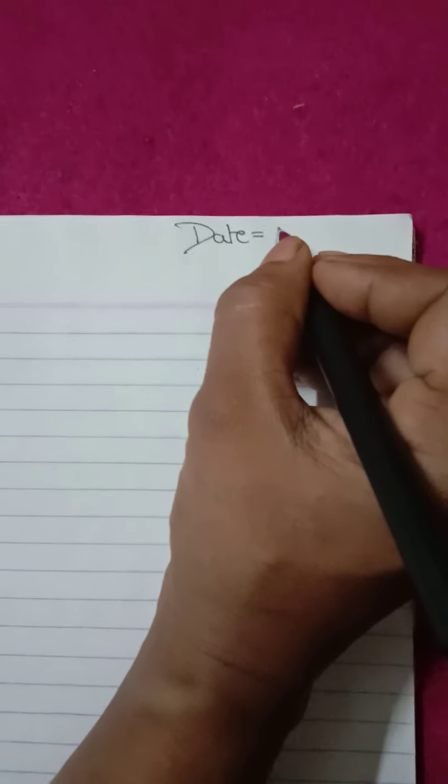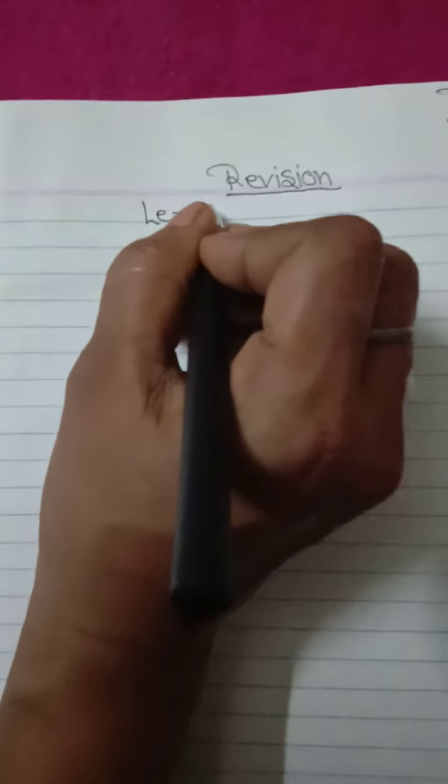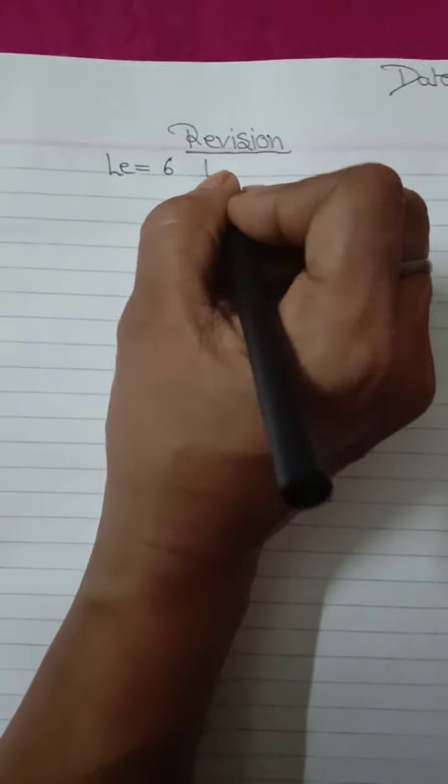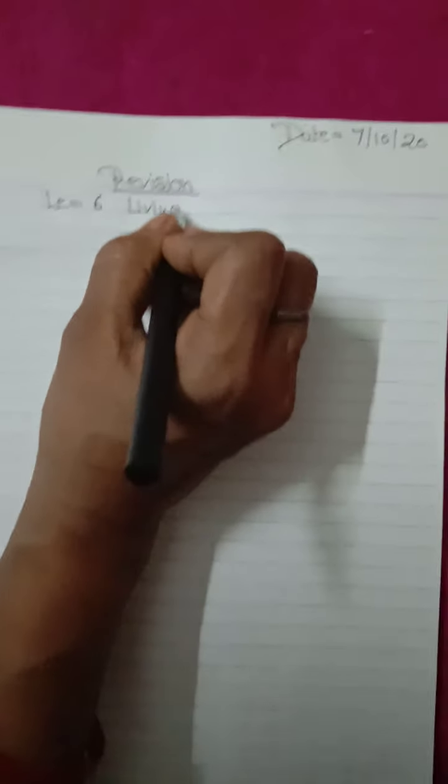Student, first mention the date. Date is 7th October 2020. Heading revision, Lesson 6, Living and Non-Living Things. Okay.